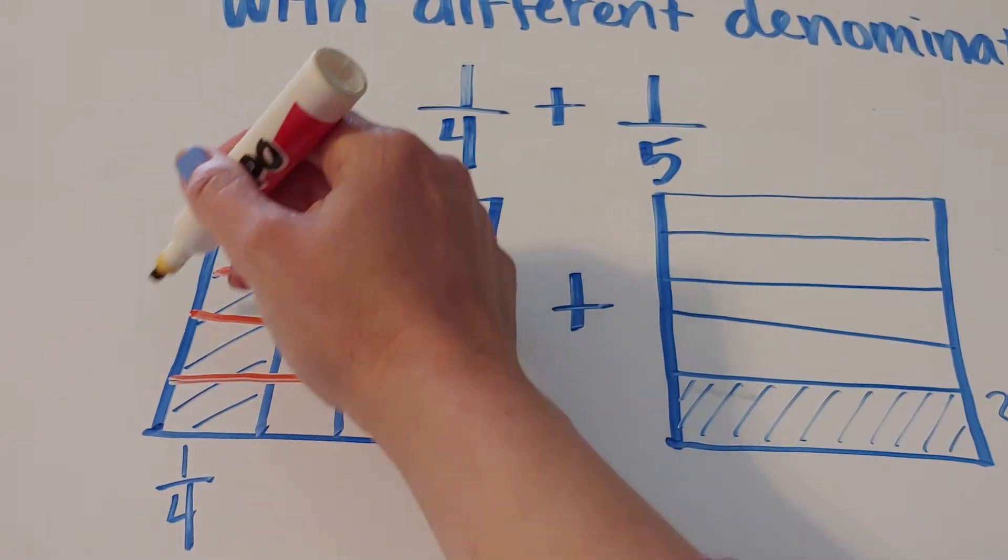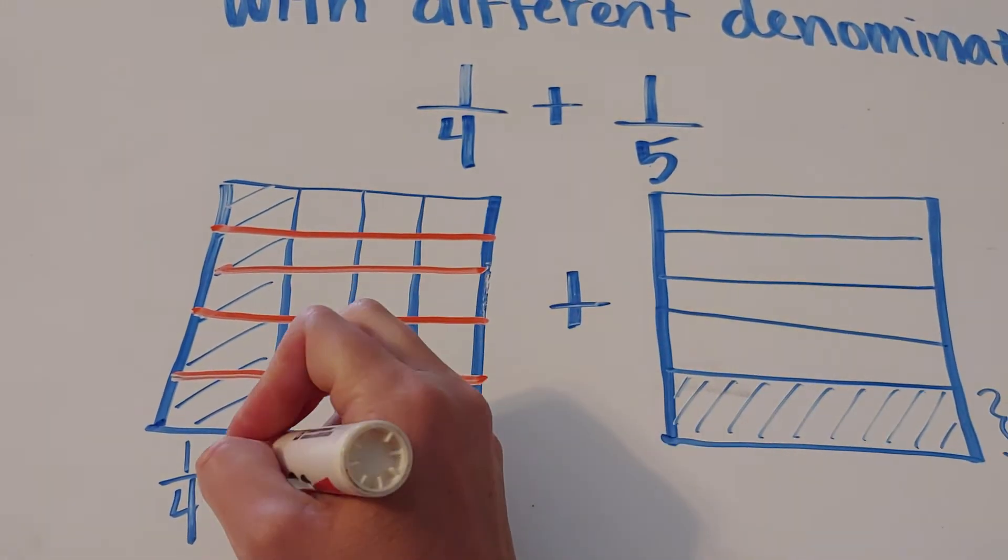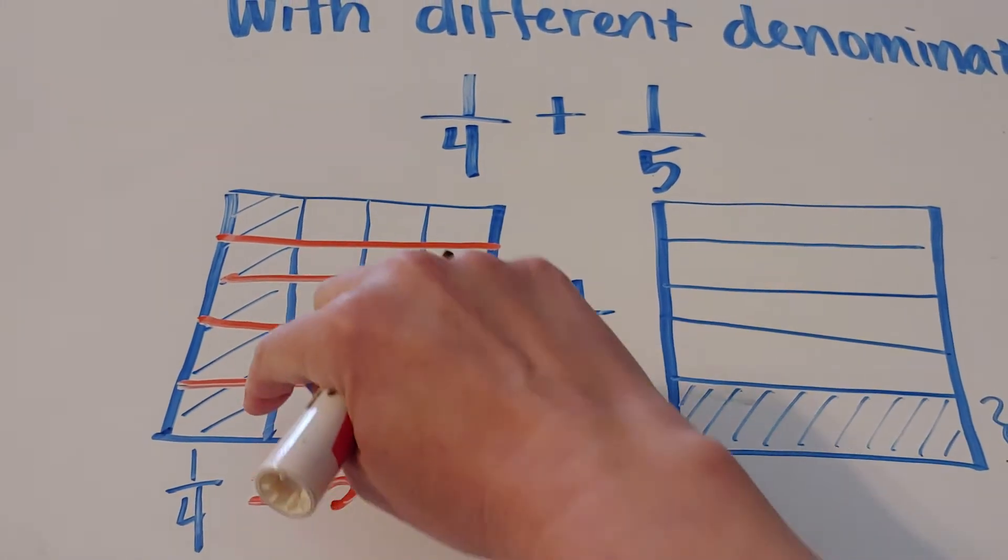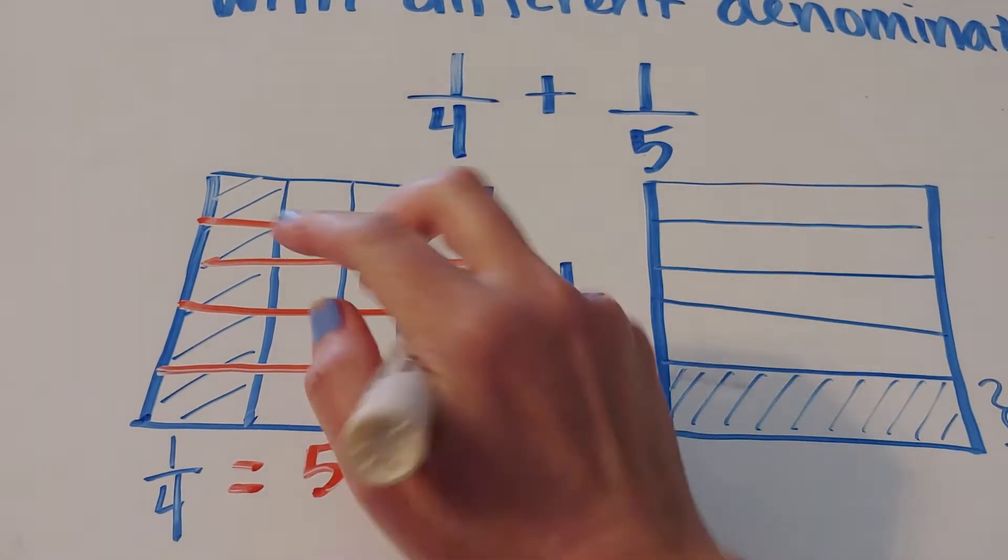So what happens is that that one-fourth is now the same thing as five shaded squares out of a total of twenty.